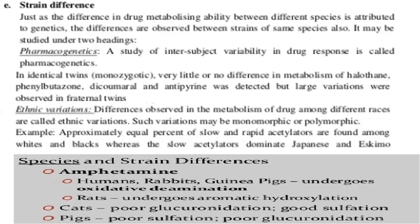To illustrate species and strain differences: amphetamine in humans, rabbits, and guinea pigs undergoes oxidative deamination as the metabolic pathway, whereas in rats it undergoes aromatic hydroxylation. In cats, glucuronate conjugation is very limited, while sulfate conjugation is the major preferred pathway.